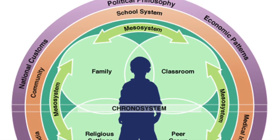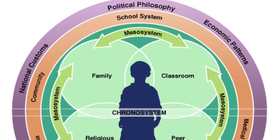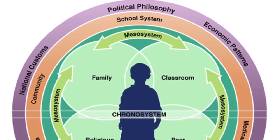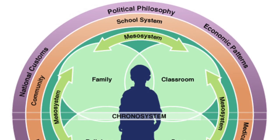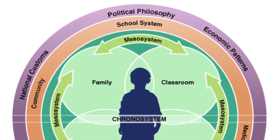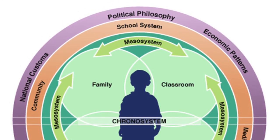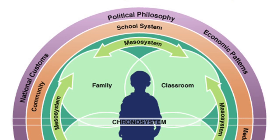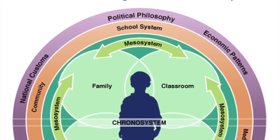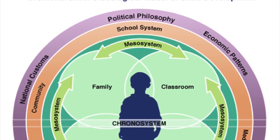And finally, working their way out to the chronosystem, which represents the changes over time as the child grows and develops. These five parts do not work independently, but instead interact and work together in the child's development.